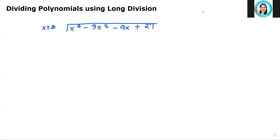So we get the first term — let me use this side as the scratch area. It's x cubed, we divide it by the first term of the divisor, which is x. Remember, when dividing variables, all you have to do is subtract their exponents, so 3 minus 1 gives us 2, so the exponent of x is 2 — that is x squared. After doing that, the answer you got should be multiplied to all of the terms in the divisor.